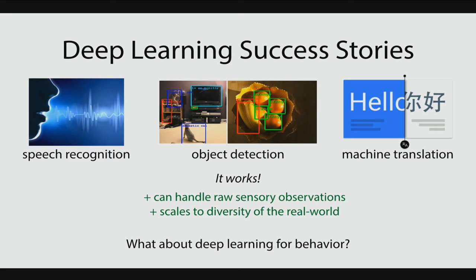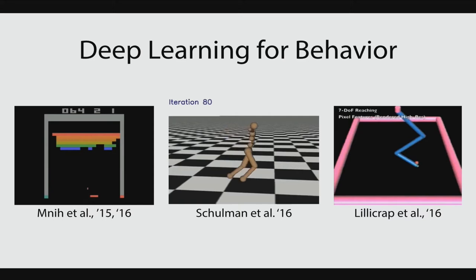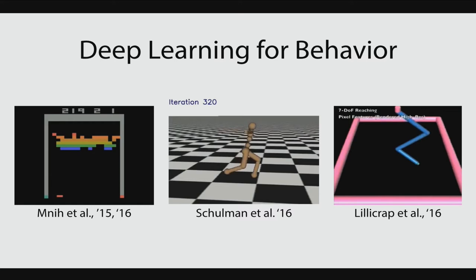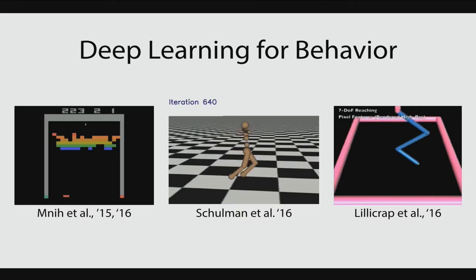But what about deep learning for behavior? There have been a number of success stories — learning Atari games, learning locomotion, learning reaching. These are fantastic examples of learning very complex behaviors. But one thing you might notice is that all of them are in simulation. The reason is that they require a lot of experience in order to learn. So how can we use deep learning for learning in the real world?